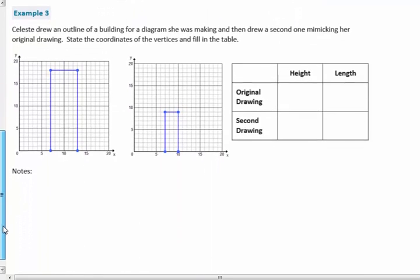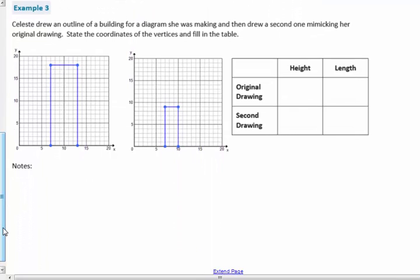Example three, Celeste drew an outline of a building for the diagram that she was making and then drew a second one mimicking her original drawing. So this is the original. This is the scaled drawing. State the coordinates of the vertices and fill in the table. State the coordinates means tell me the X, Y pair.